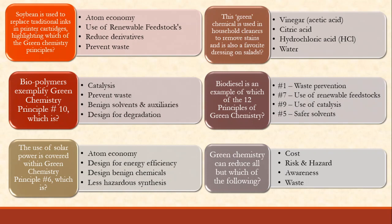Soybean is used to replace traditional ink in printer cartridges — which of the green chemistry principles does this highlight? It's replacing a traditional material, so it reflects the use of renewable feedstocks — principle number 7 — where you use renewable feedstocks. Soybean is renewable, so the overall product is green.